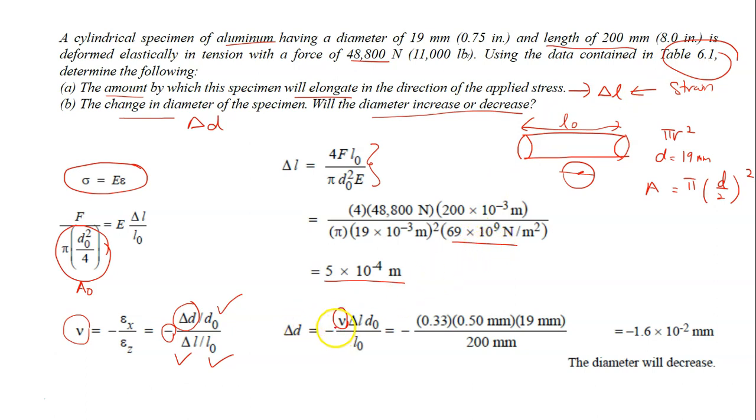So let's look, just look for the Poisson's ratio for aluminum. So you will get 0.33, which is the ν value. And then this is your delta L, which is this one. And then this is D₀, the diameter.